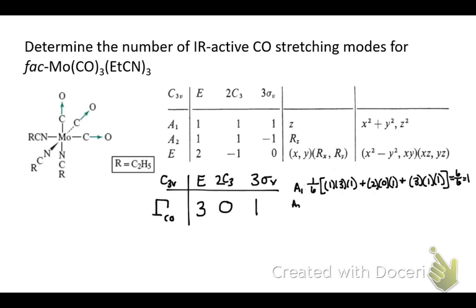We do the same thing for A2. Divide by the order. One times three times one plus two times zero times one. Those zeros end up really helping out. Times three times one times negative one. Now that negative one is going to mean that we have zero A2 CO modes.